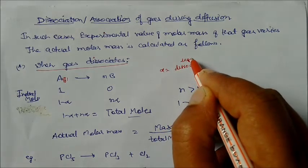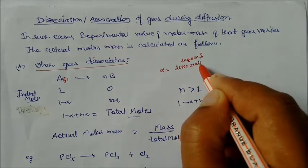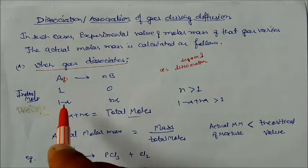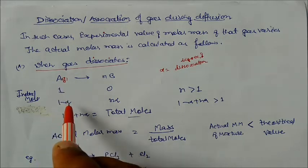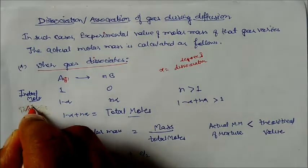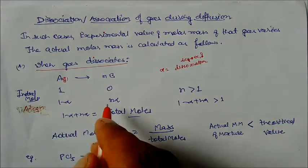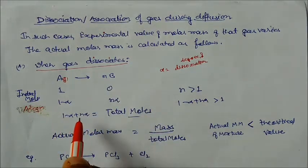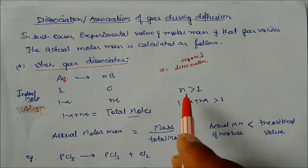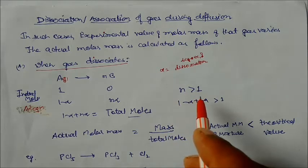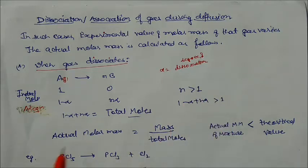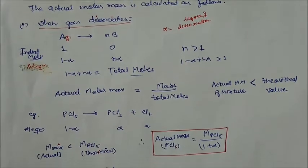Alpha is the degree of dissociation — how many moles of the gas are dissociated. So at equilibrium, n×α moles of B are formed, and 1−α moles of A remain. Total moles at equilibrium = (1−α) + n×α. Since n is always greater than 1, the total moles will always be greater than 1, i.e., 1 + α(n−1) > 1.